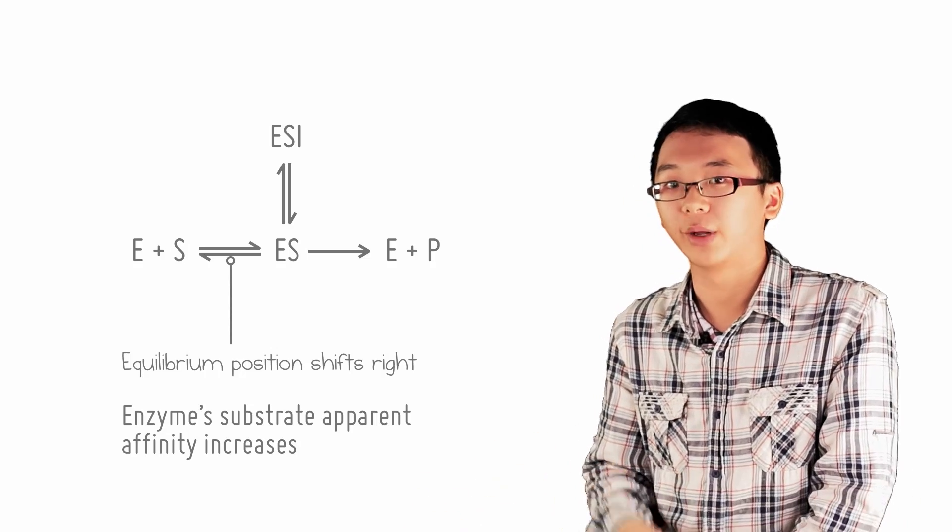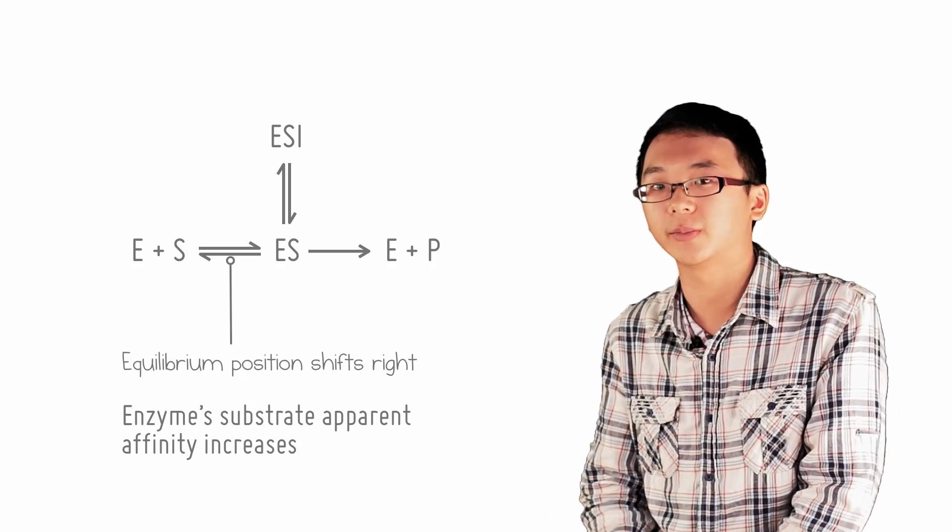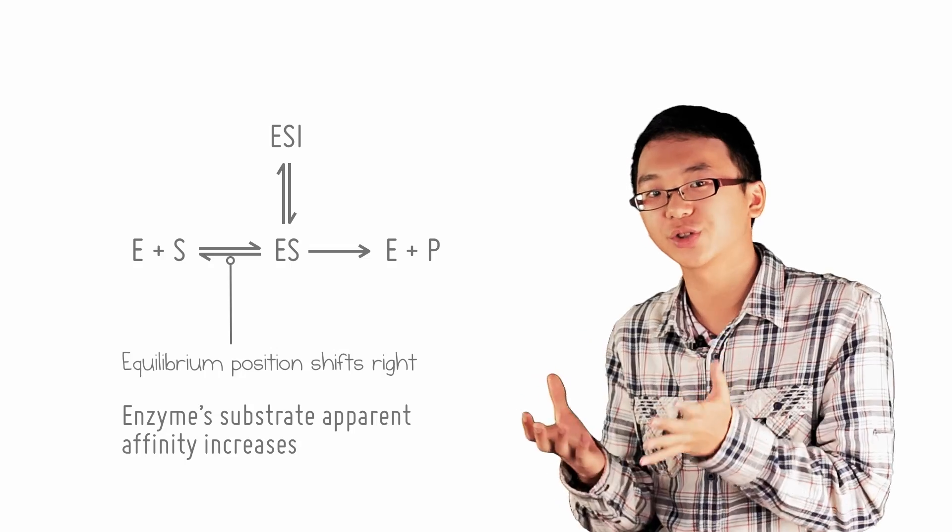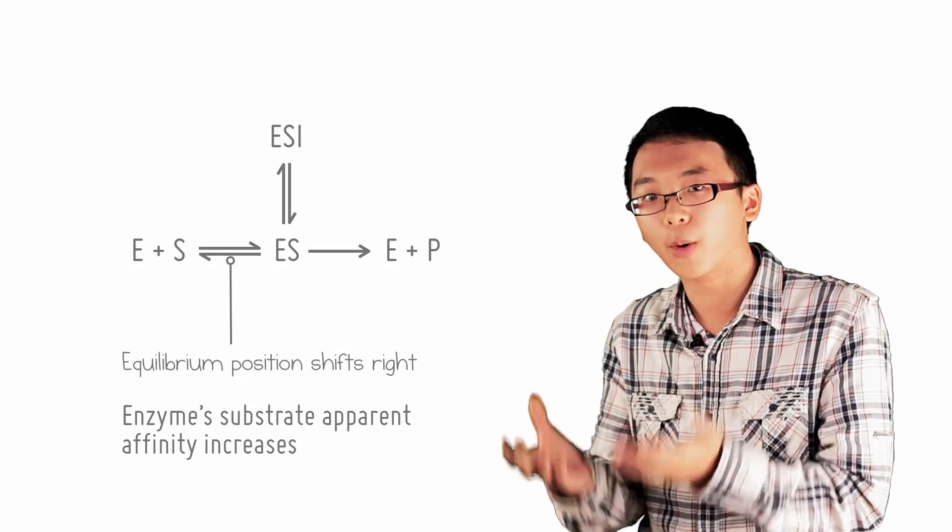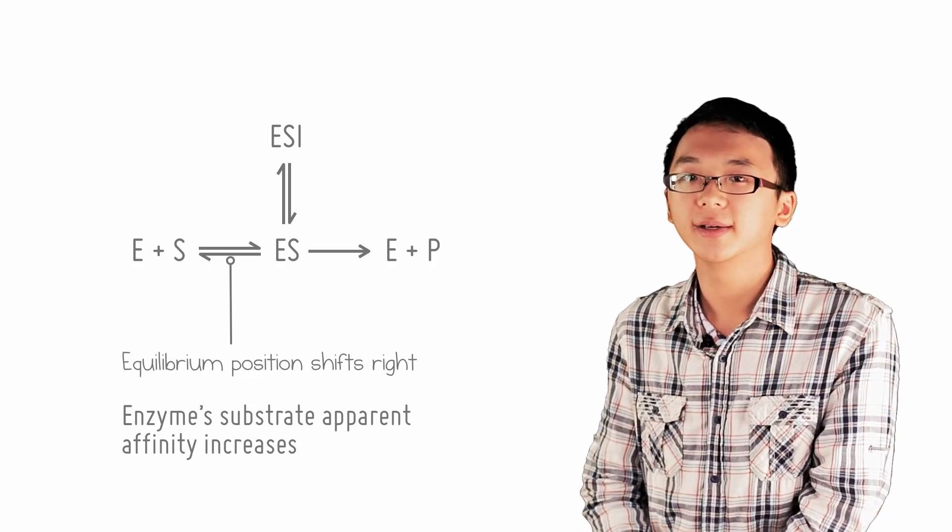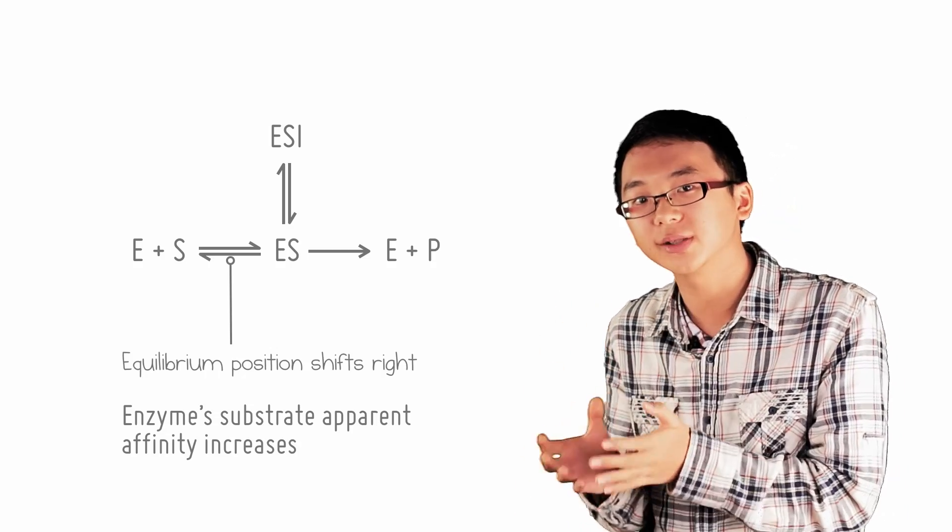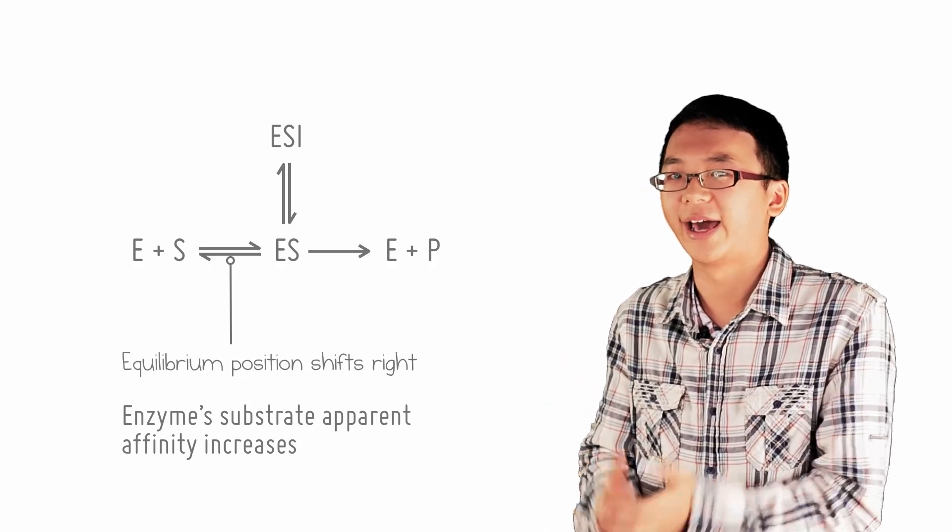Or if you put it another way, by removing enzyme-substrate complexes from the system, the equilibrium position of the first reaction shifts to the right in favor of producing more enzyme-substrate complexes. Hence, it is an apparent greater affinity, and not an actual one.